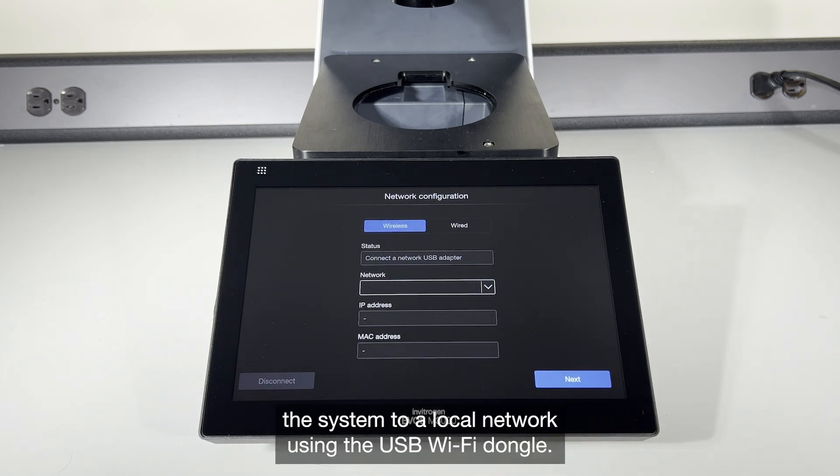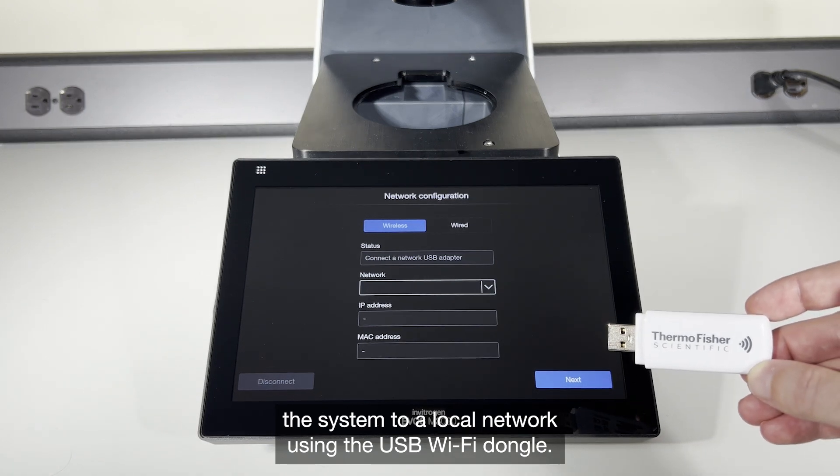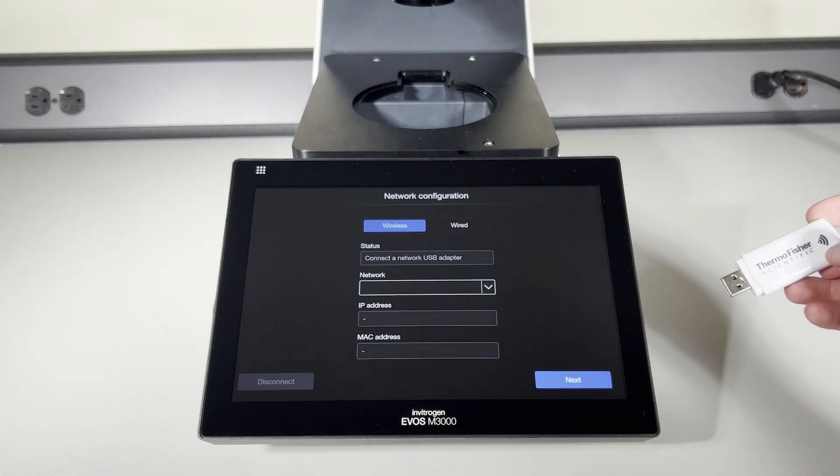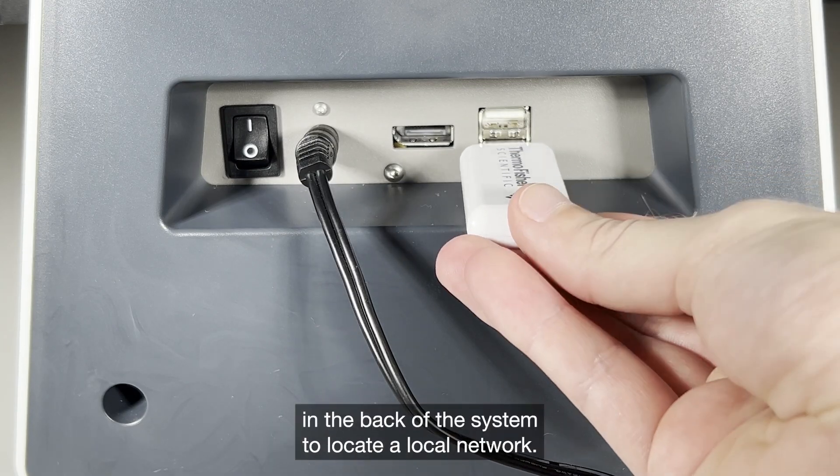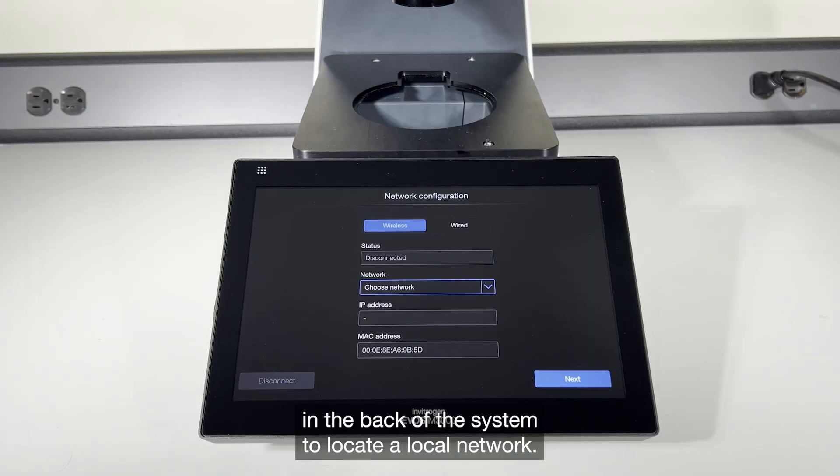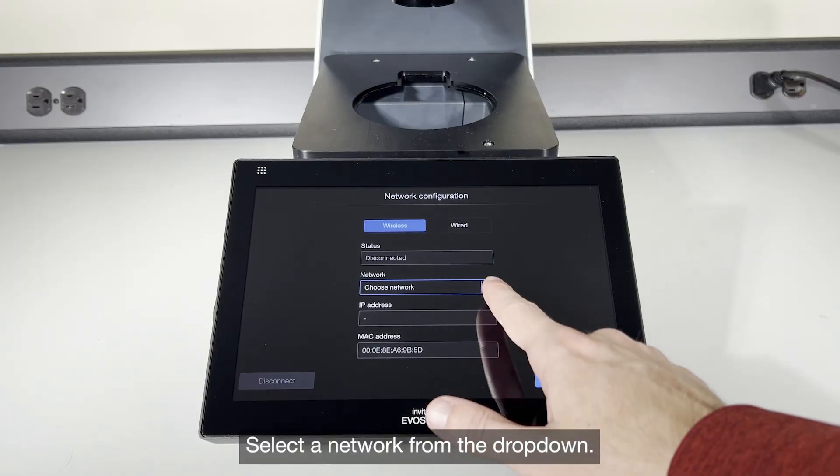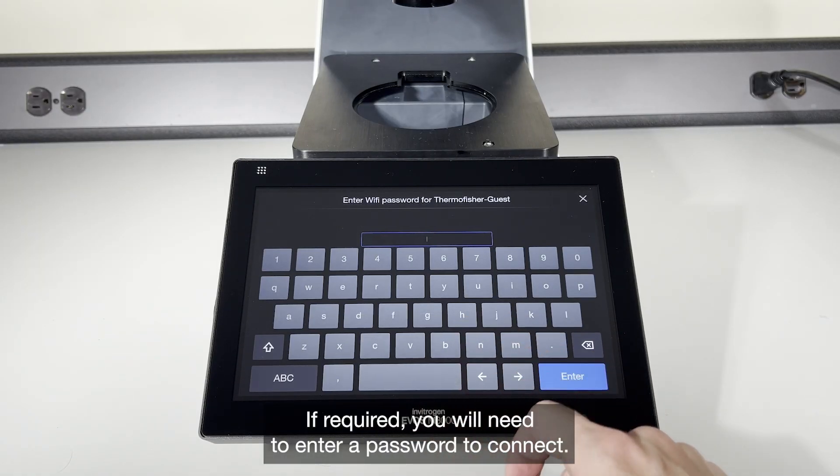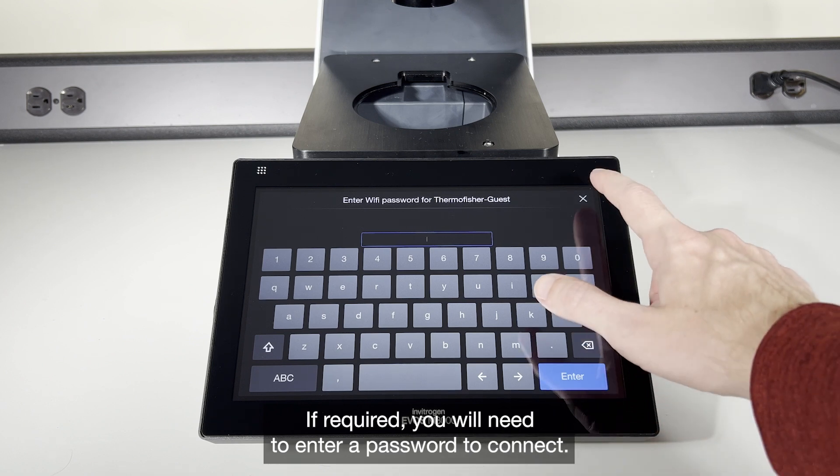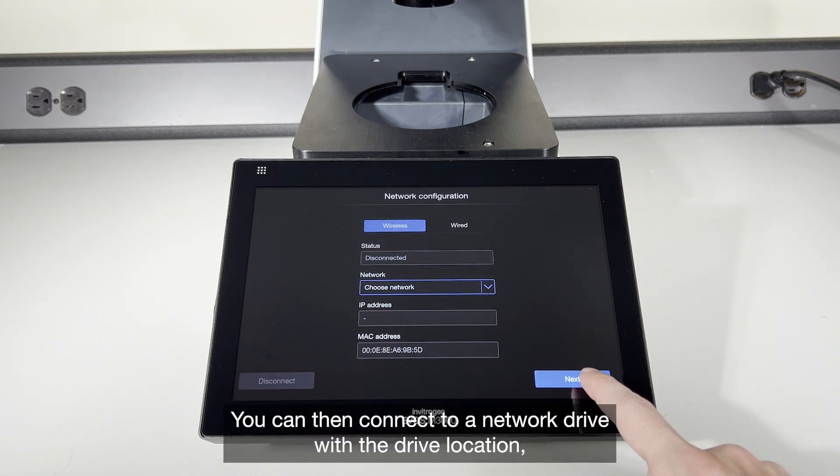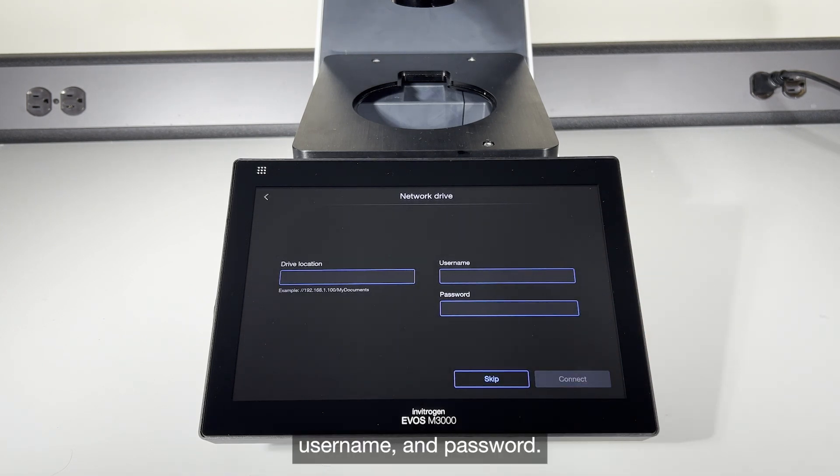Plug the dongle into a USB port in the back of the system to locate a local network. Select a network from the drop-down. If required, you will need to enter a password to connect. You can then connect to a network drive with the drive location, username, and password.